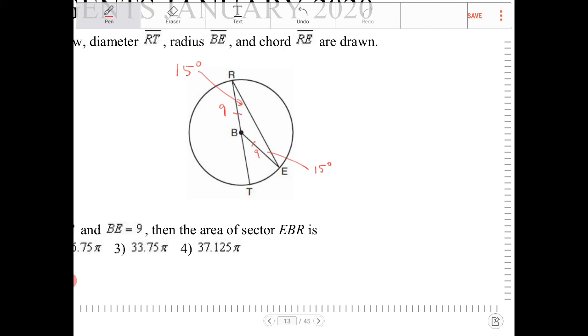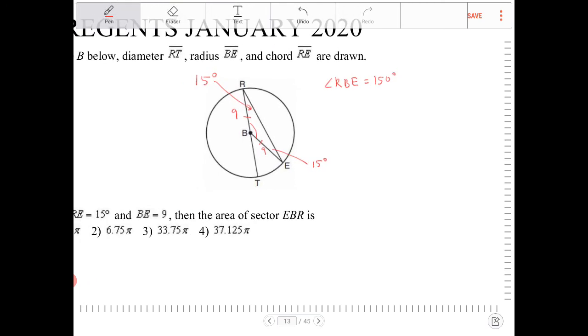So if those two base angles are 15 degrees, then that means the central angle that I have here, angle RBE, will equal 150 degrees. So that's 150 degrees.